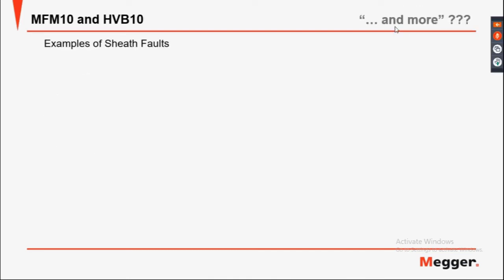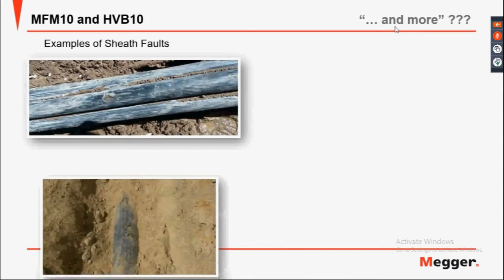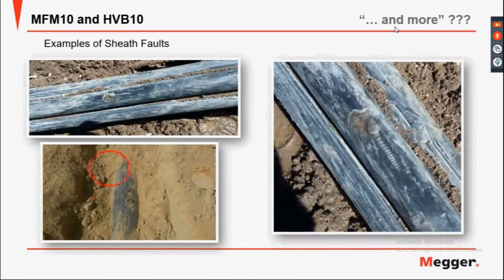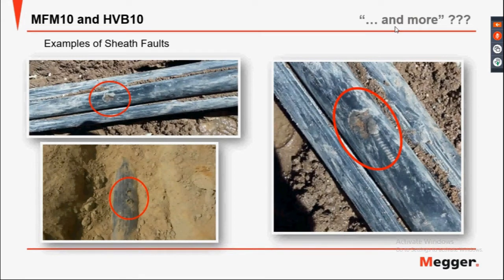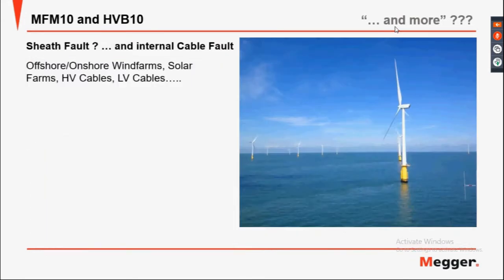Examples of what a sheath fault is: it's damage to the jacket, usually mechanical damage through installation or repairs. We use it onshore and offshore wind farms because of the length of the cables. Solar farms are usually unarmoured HV cables and LV cables.